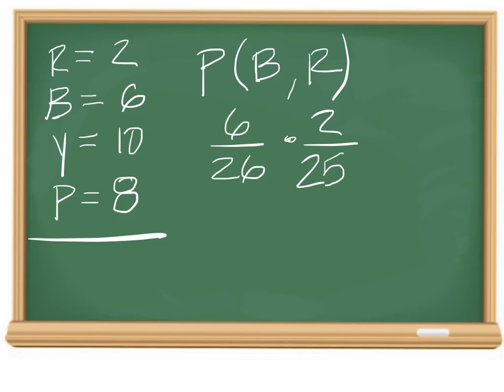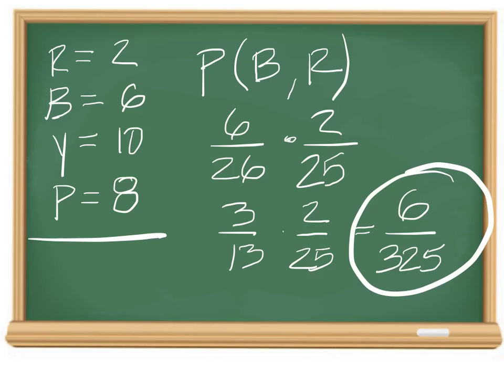Yeah, this would be 25 because we now only have 25 marbles in the jar. And for the red, there should still be 2. So now you can reduce the 6 over 26 and make it 3 over 13. And you can multiply straight across to get 6 over 325. So the final answer is 6 over 325.